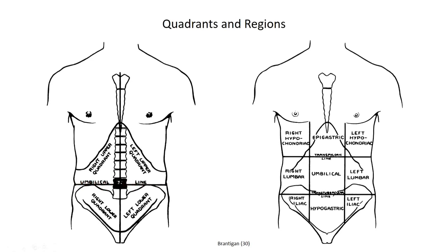The upper right quadrant contains, among other things, the liver, gallbladder, head of the pancreas, and right kidney. The upper left quadrant hosts the majority of the stomach, the whole of the spleen, body of the pancreas, and left kidney.